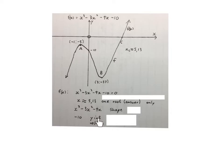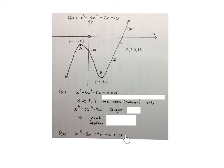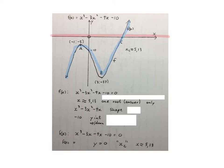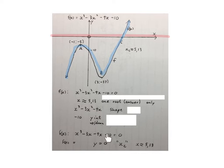The shape of this cubic function is determined by the front part of the equation. The minus 10 is your y-intercept, which moves the shape up or down. So if you write this equation equal to zero, it's actually asking where is f of x equal to zero — where the blue graph crosses the x-axis. That's at point C, so x at C is rounded off to 5.13. This cubic function has one root.